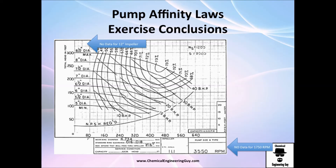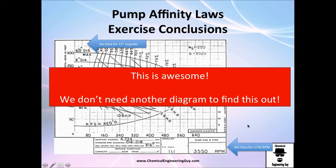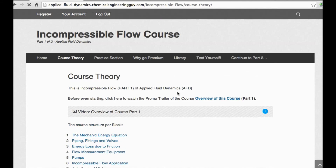The conclusion is that with pump affinity laws we don't need the diagram at all. Even though we didn't have a 12-inch diameter curve or a 1750 RPM diagram, we were still able to calculate everything asked. This diagram is made for a 3500 RPM motor, so it's completely useless for 1750 RPM operation — but with the affinity law equations, we can find all the data we need without requiring another diagram.